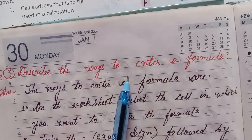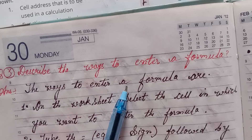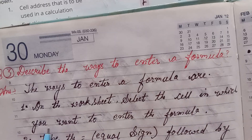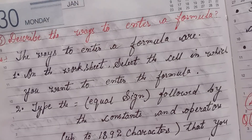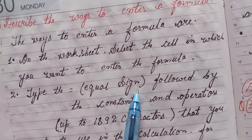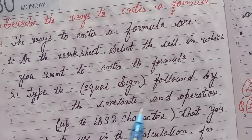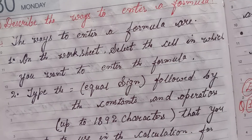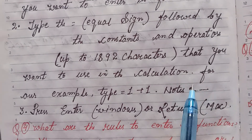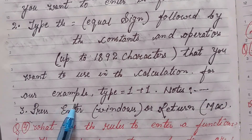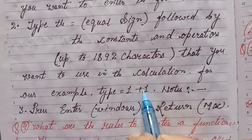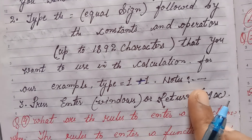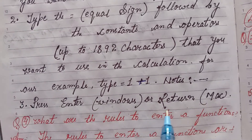Three, describe the ways to enter a formula. Answer: The ways to enter a formula are: first, on the worksheet, select the cell in which you want to enter the formula. Second, type the equal sign followed by the constants and operators, up to 8,192 characters, that you want to use in the calculation. For example, type 1+1. After that, press Enter on Windows or Return on Mac.